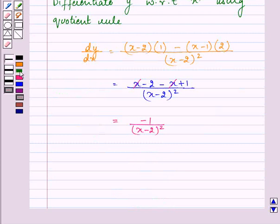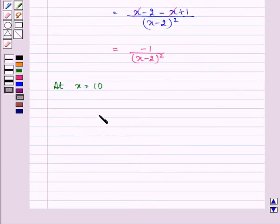Now to find out the slope at x is equal to 10 we have to find out the value of dy by dx at x is equal to 10.